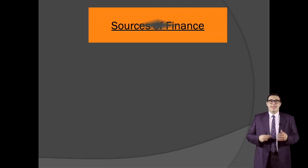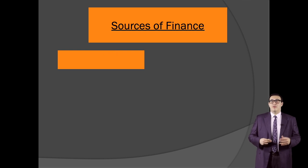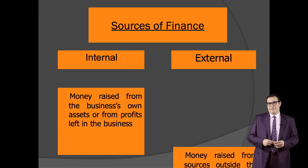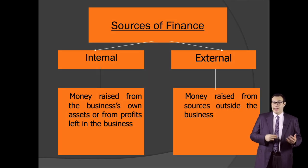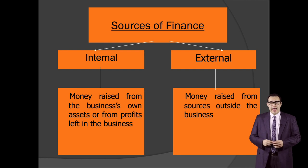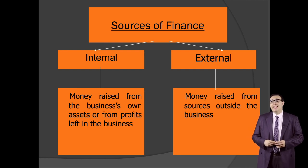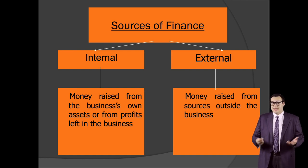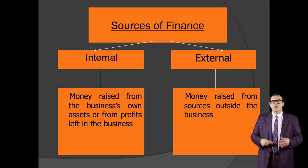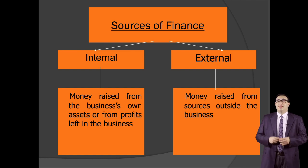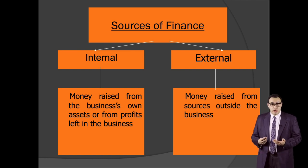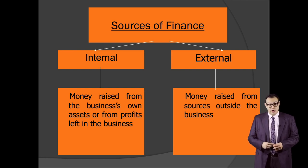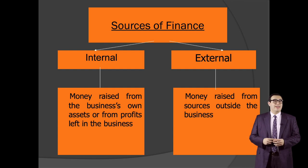Looking at the major graph on screen, there are two ways of financing, or two sources of finance: internal and external. Internal is when money is raised from the business itself, like raising money from owned assets or by retaining profits. External is when money is raised from sources outside the business. Debt financing is the external one, whereas equity financing is the internal one — these are just other names for them.